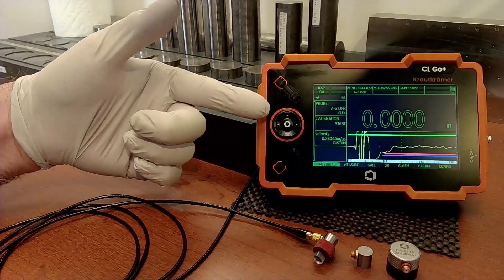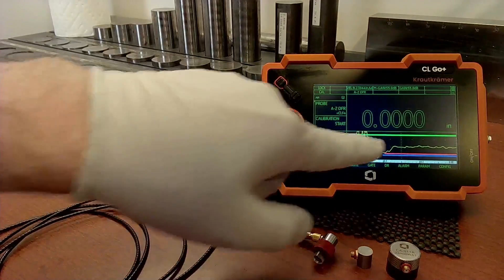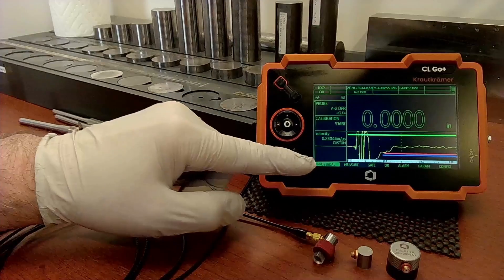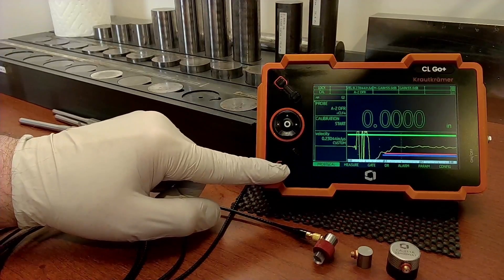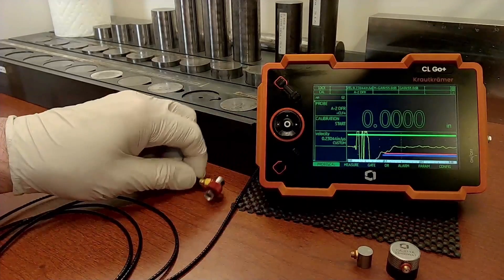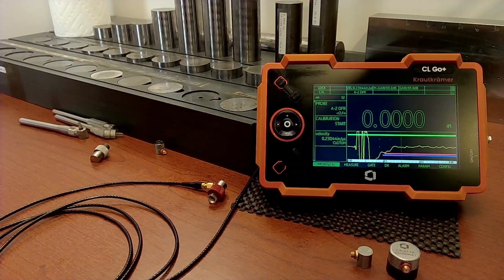We have booted into the precision thickness mode. I have a simplified set of the menus available. I have taken the opportunity to assign one of my function keys to calibrate. So normal thickness gauge, we power up, we calibrate, and we go measure things.